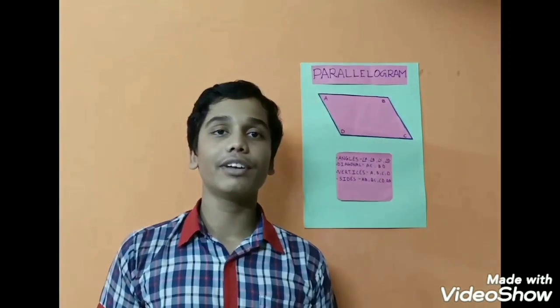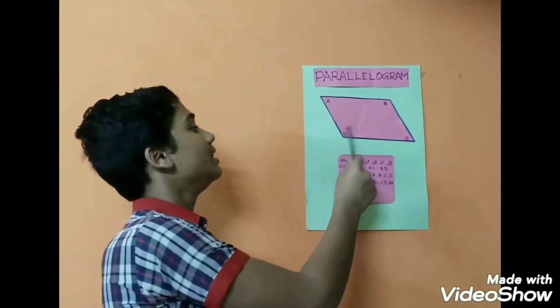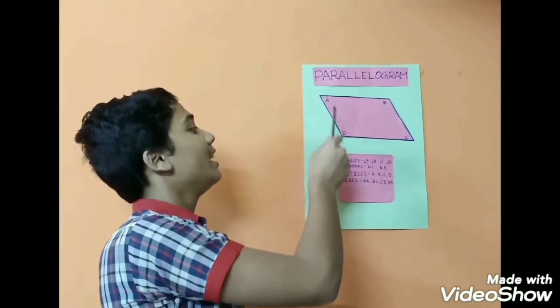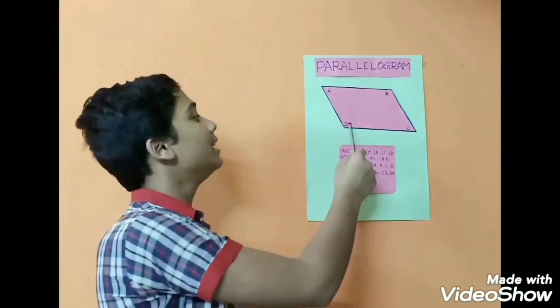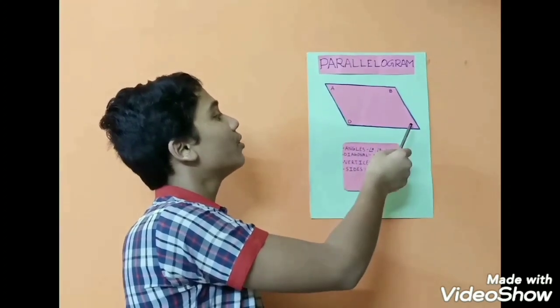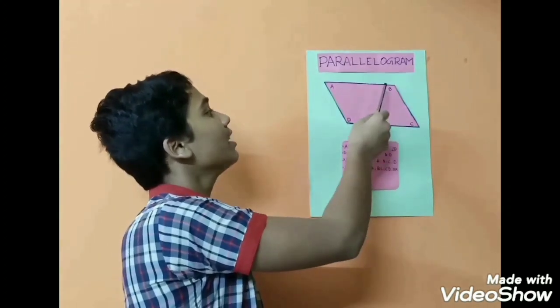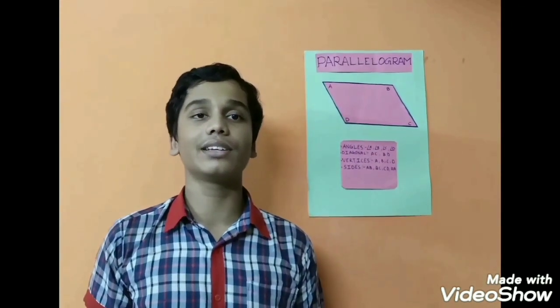Adjacent sides are when one side starts where another ends. For example, BC and CD is one adjacent side, and BA and AD is another adjacent side. Adjacent angles are when two angles lie on the same side — like angle D and angle C lie on the same side BC, so they are known as adjacent angles.